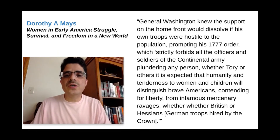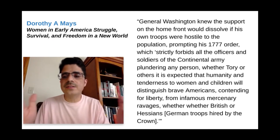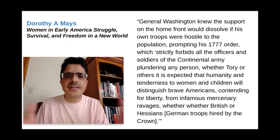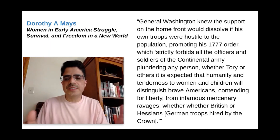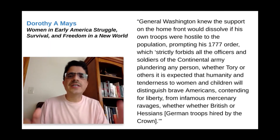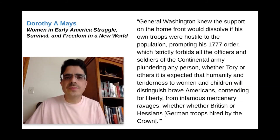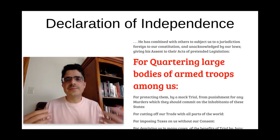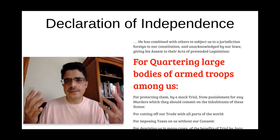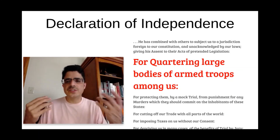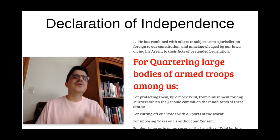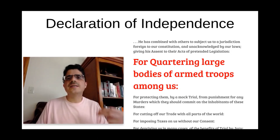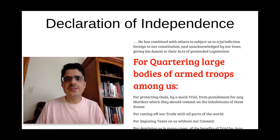General Washington knew the support on the home front would dissolve if his own troops were hostile to the population, prompting his 1777 order which strictly forbids all officers and soldiers of the Continental Army from plundering any person, whether Tory or others. It is expected that humanity and tenderness to women and children will distinguish brave Americans contending for liberty from infamous mercenary ravagers, whether British or Hessians. So there was somewhat of a difference. And now you have a better sense of what John Lind tried to do in response to Thomas Jefferson's phrase in the declaration — that the reason they were breaking apart from King George was because of his quartering large bodies of armed troops among us. There were financial problems with that, there were concerns about liberty, and of course there were the atrocities — including rape as we saw.